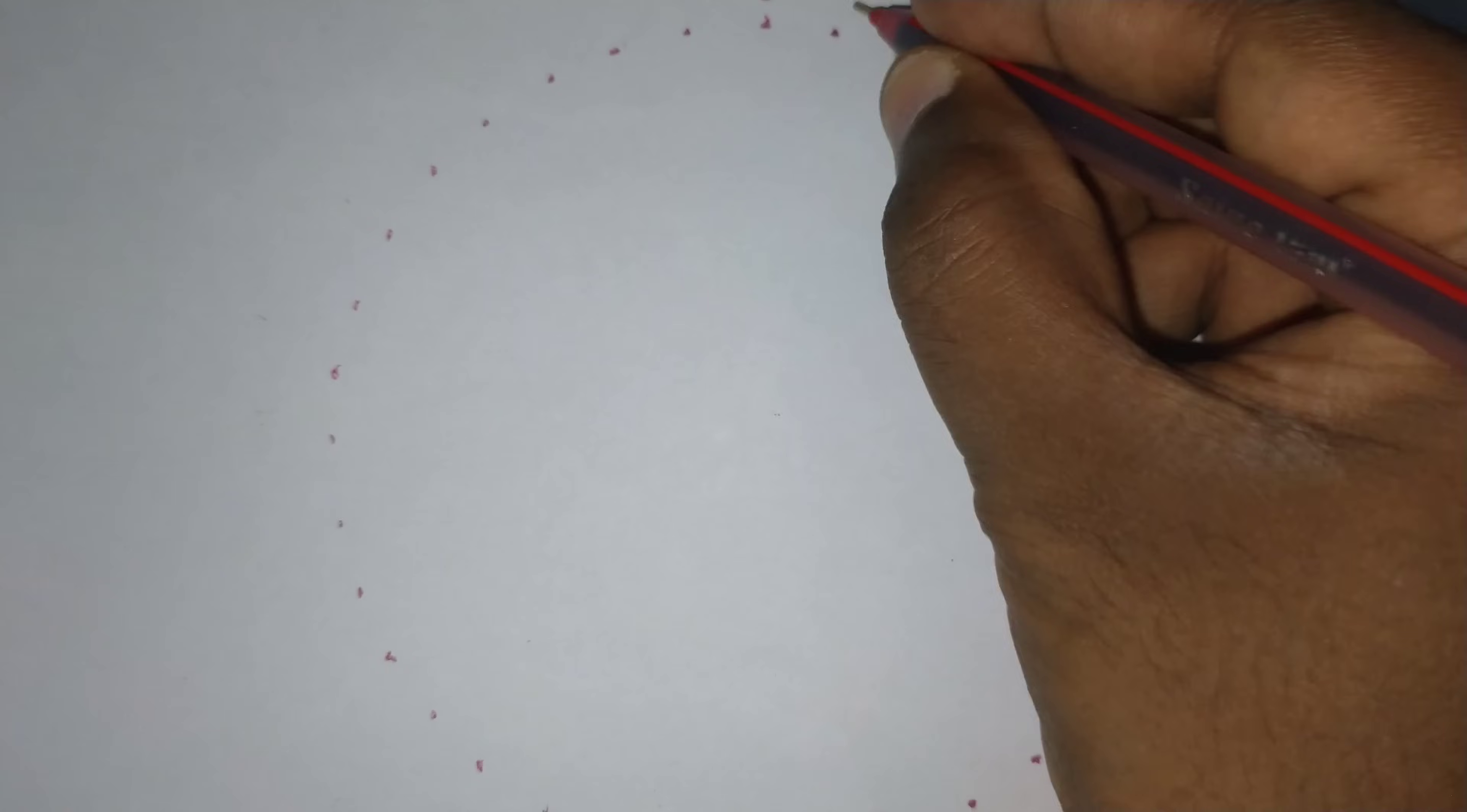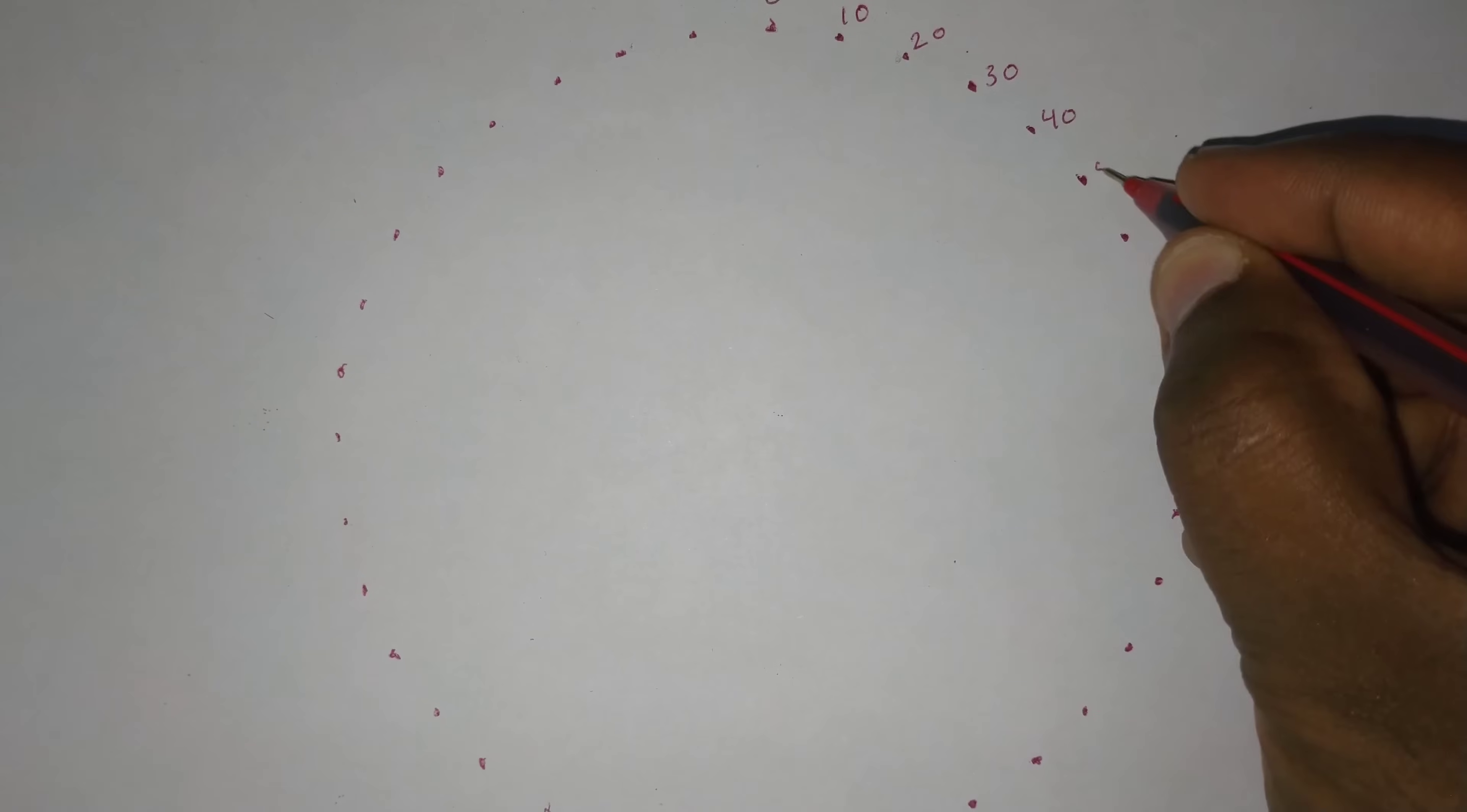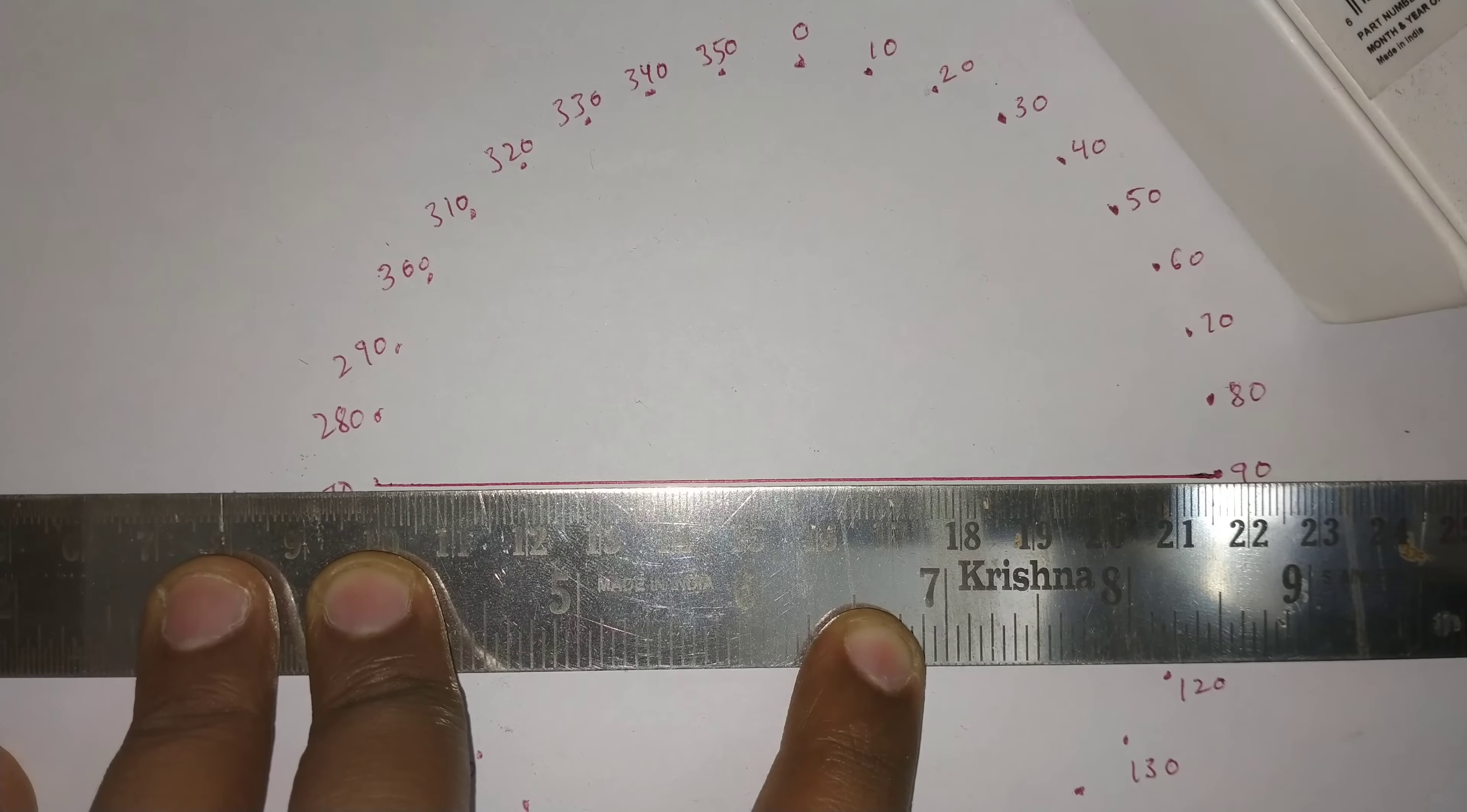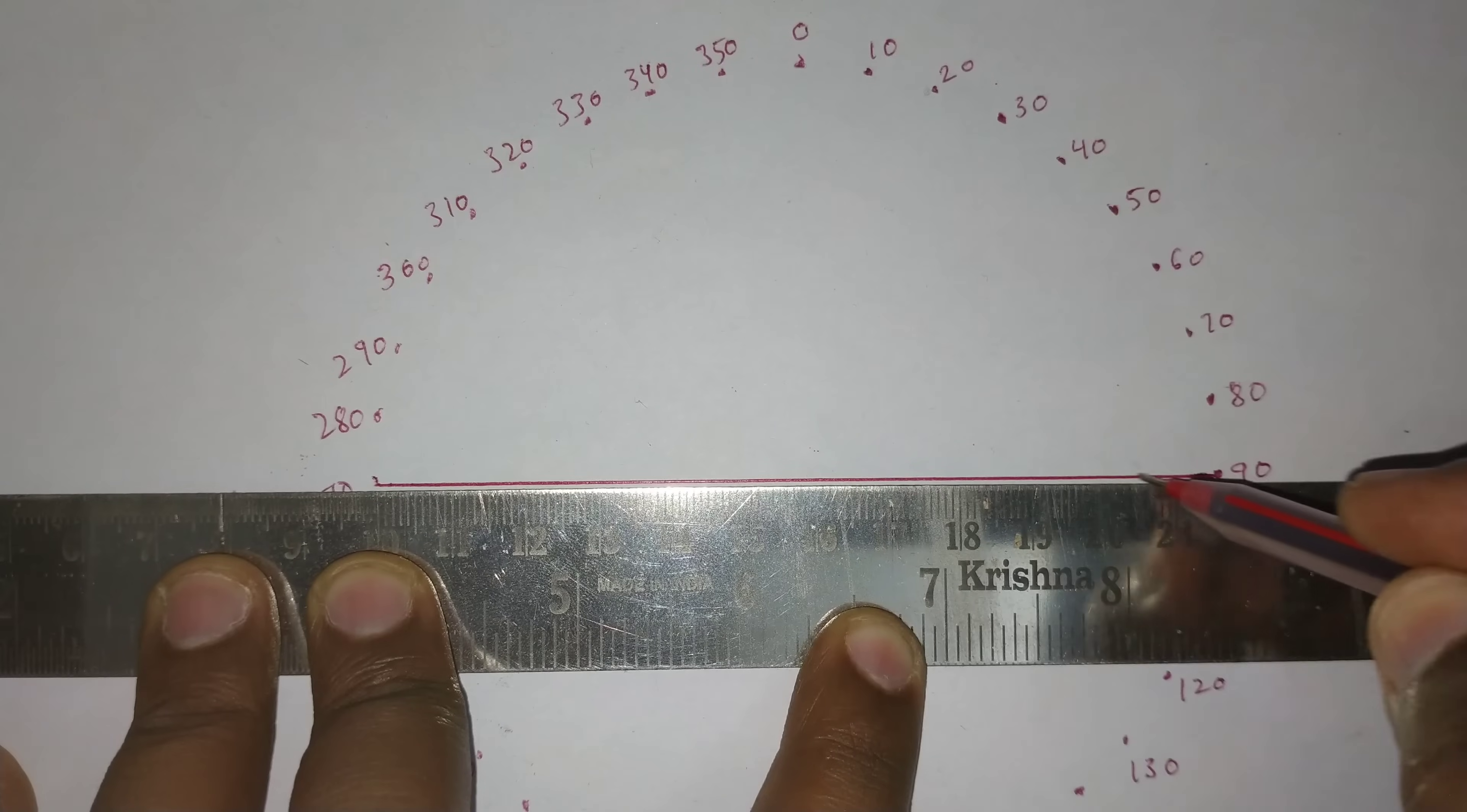I am giving the numbers from 0 to 360 degrees, and I am bisecting the circle to the middle of the circle.